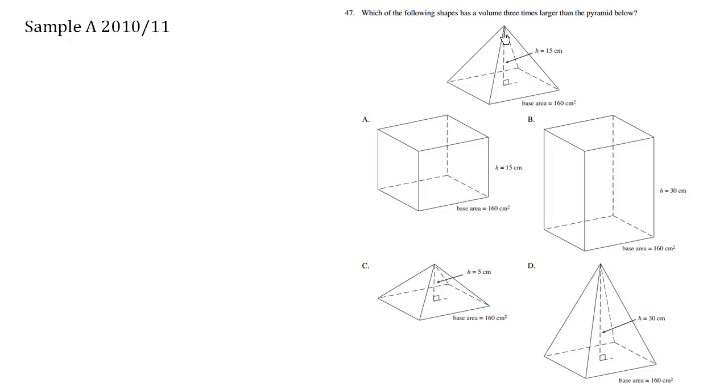So the answer here, which of the following shapes has a volume three times larger than the pyramid below? We have choice A is correct.